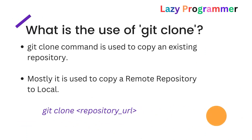Next is Git clone. Whenever you start working on a project you will be assigned a specific feature, and the team will already have a repository created at a remote location. To start working on the feature in the existing application, you need the code from that remote repository. You can use the git clone command, which copies the existing repository from the remote to your local machine so you can start working on your assigned feature.